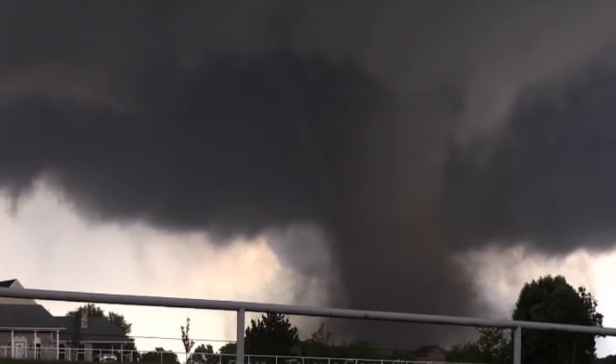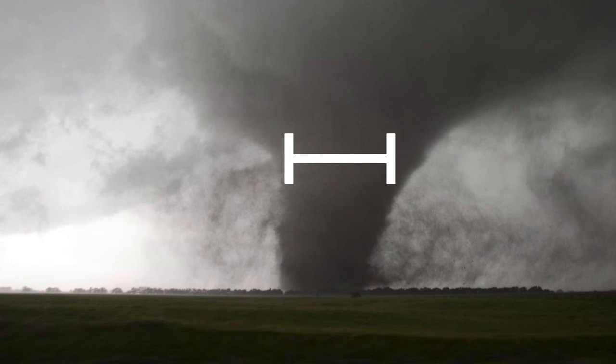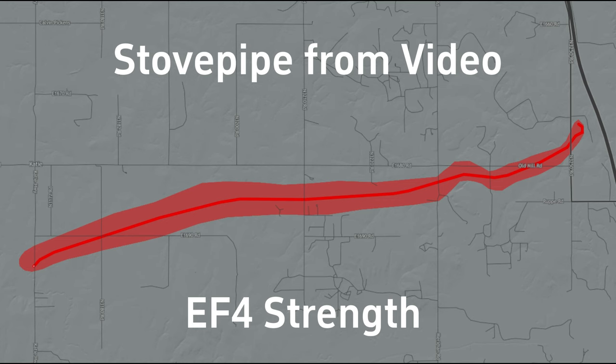Stovepipes are medium sized tornadoes and are the same width from the ground to the cloud base. Despite their size, these tornadoes can have very high winds.